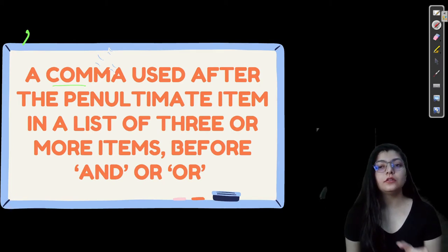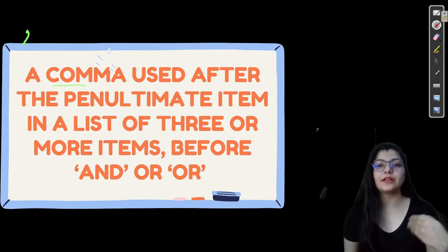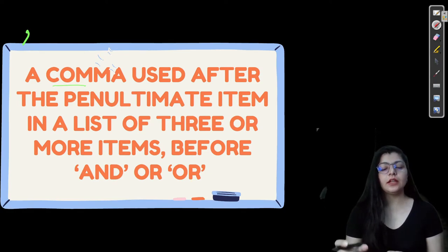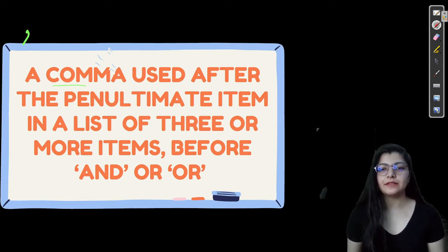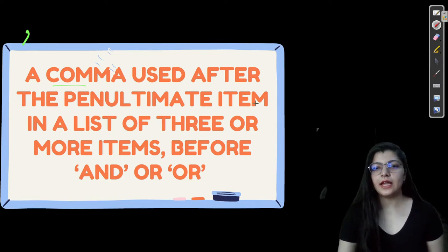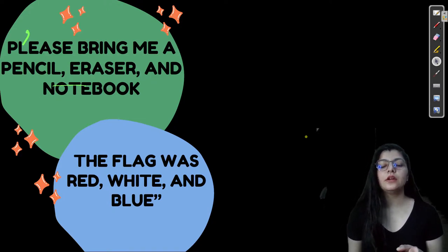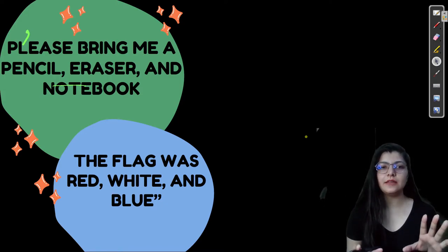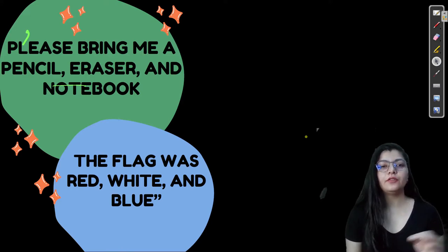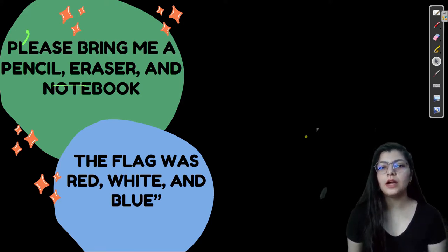The Oxford comma appears before 'and' or 'or' in a list. For example, you are given four items: eraser, sharpener, pen, pencil. Let's understand with the help of an example. See: 'Please bring me a pencil, eraser, and notebook.' Three things are given, and you have to differentiate all these items with the help of a comma and the word 'and'.